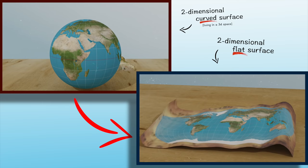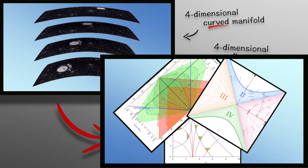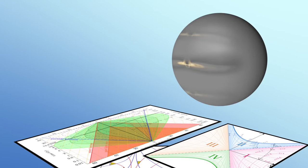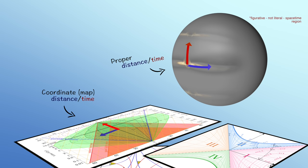Just as with maps of the Earth, no single coordinate system can encompass the entirety of a space-time region while accurately preserving proper distances and proper times.